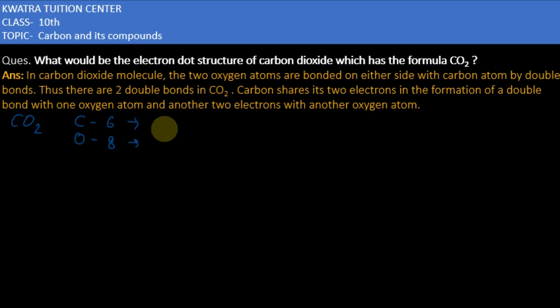This will help us to make electron dot structure because we need to know the outermost electrons. Electronic configuration of carbon is 2,4 and for oxygen it is 2,6. We have 4 electrons in carbon and 6 electrons in oxygen.